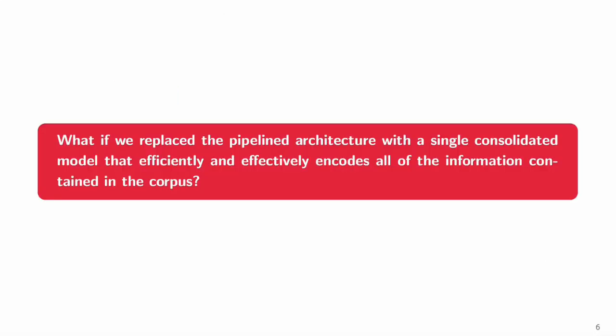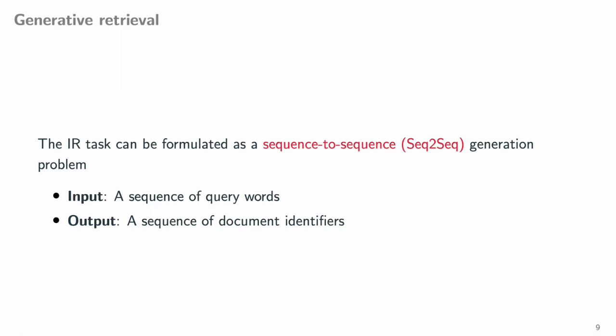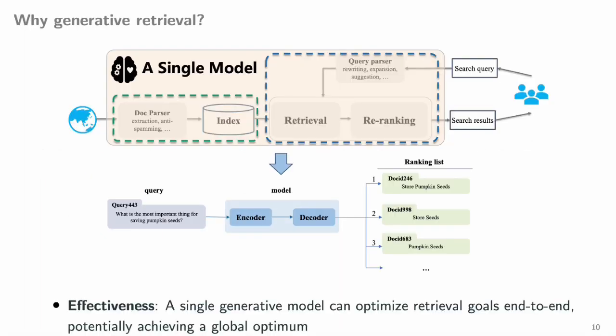This raises the question: what if we replace the pipeline architecture with a single consolidated model that efficiently and effectively encodes all the information contained in the corpus? Towards this goal, an emergent retrieval paradigm, generative retrieval, has garnered increasing attention. The idea of generative retrieval is to formulate the information retrieval task as a sequence-to-sequence generation, where the input is the sequence of query words and the output is the sequence of document identifiers.